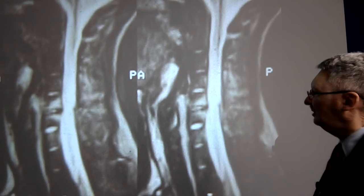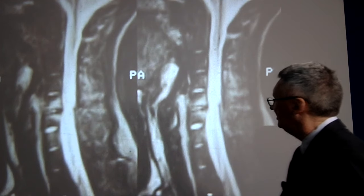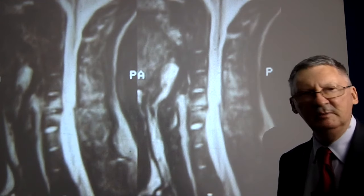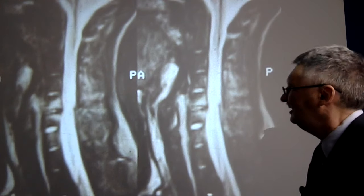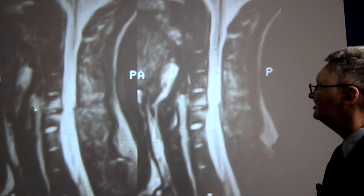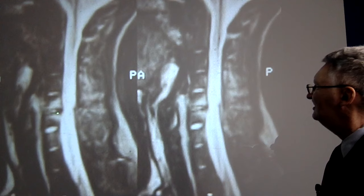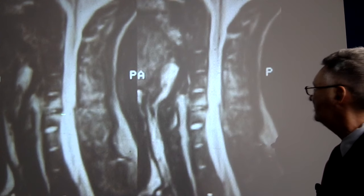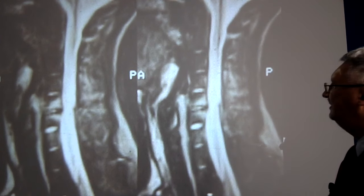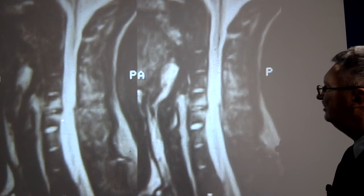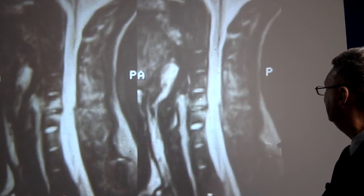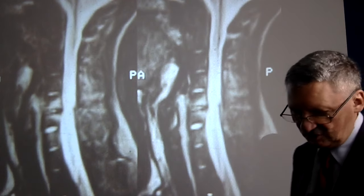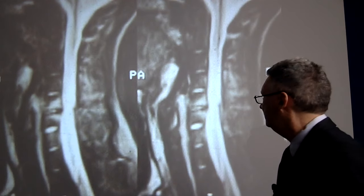If we look at a T2-weighted MR image of the patient whose radiographs I just showed you, there's a surprise. First, there's desiccation and internal disruption of the disc at the involved level. But note also that we have increased signal intensity in the vertebral bodies, again suggesting edema and inflammation.